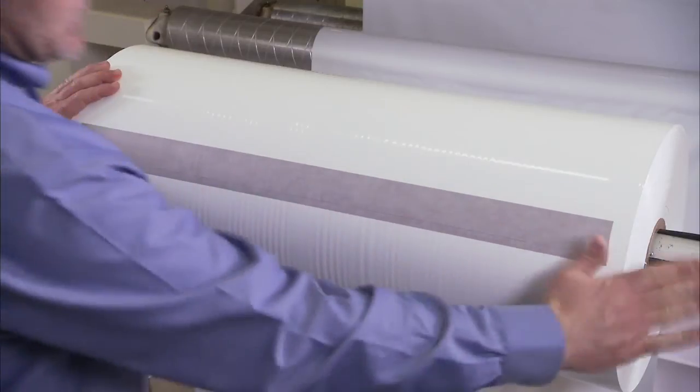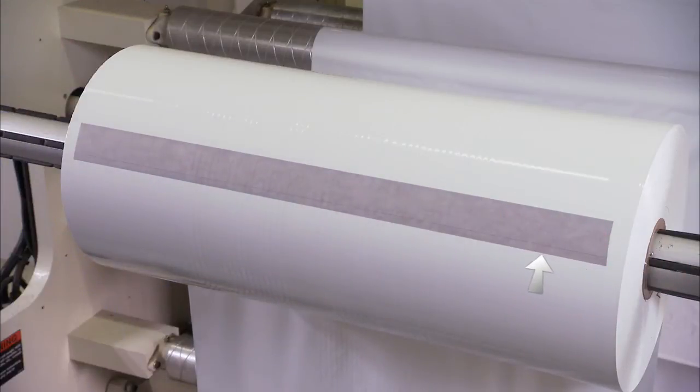Apply the splicing tape so that the adhesive covered by the narrow section of liner will be covered by the last lap of the substrate. Since this roll is coming up from the bottom, the narrow section should be on the bottom.